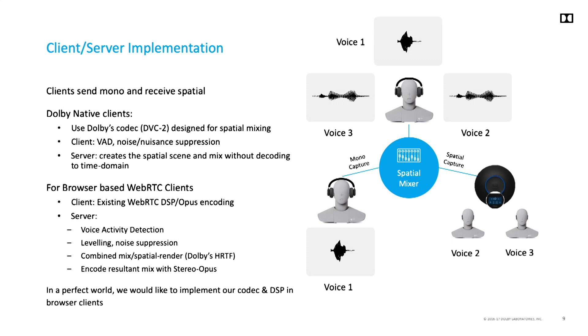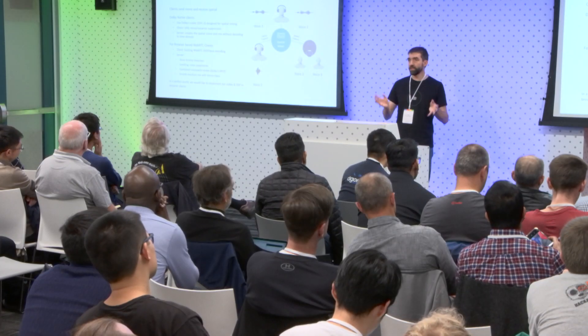When we have browser-based clients, they use the existing WebRTC DSP and Opus encoding and send it to our server, where we do more heavy lifting. We implement our VAD, do leveling and noise suppression, and perform a combined mix-render to our head-related transfer function. Then we encode the result with Opus stereo and send it to the listener, who hears this surround scene. It's more computationally expensive, but we've got quite good DSP on the server. We've got this running at scale with service providers that are predominantly WebRTC.